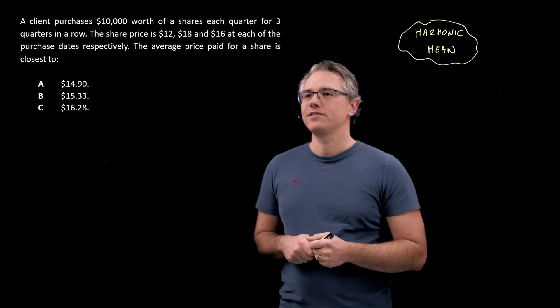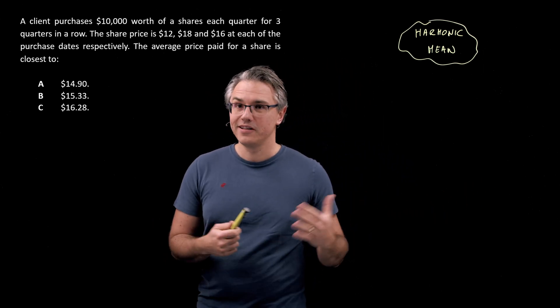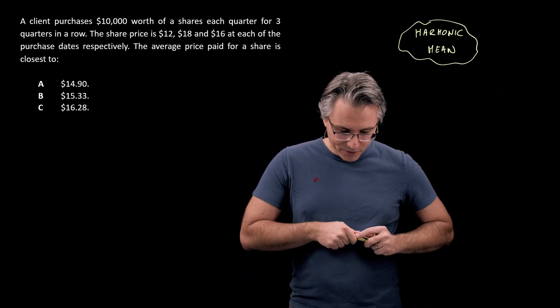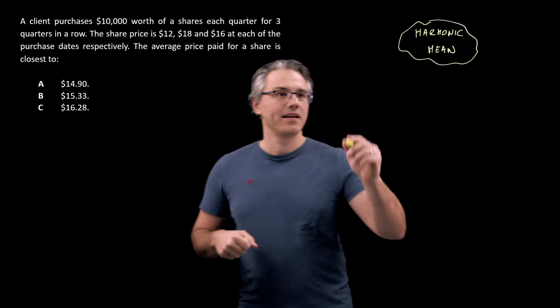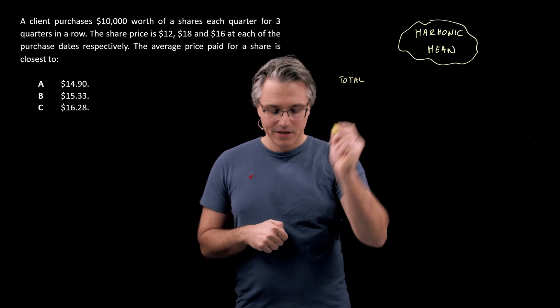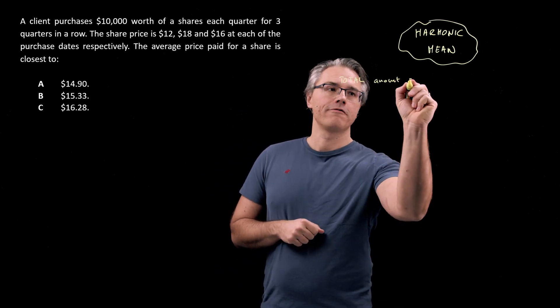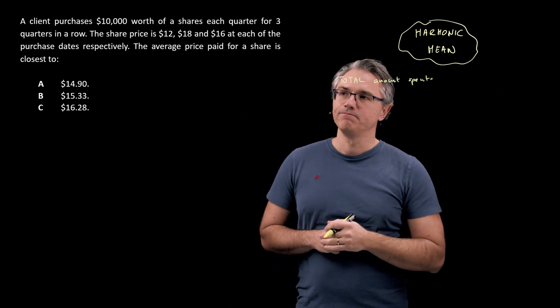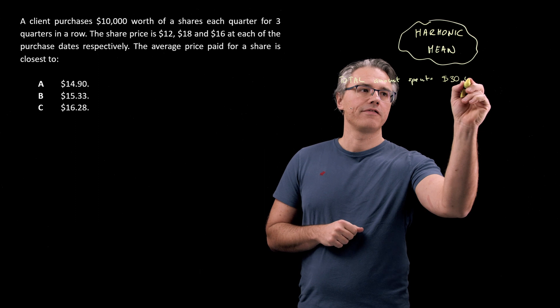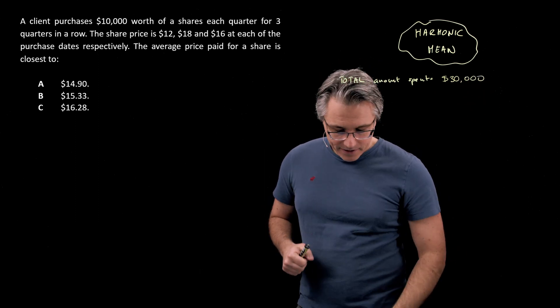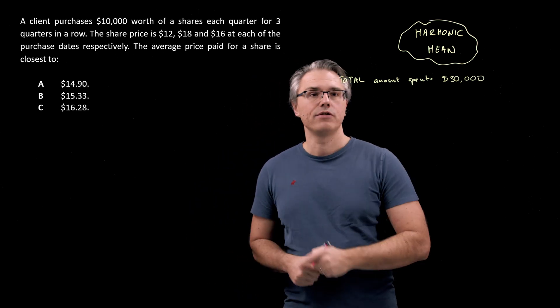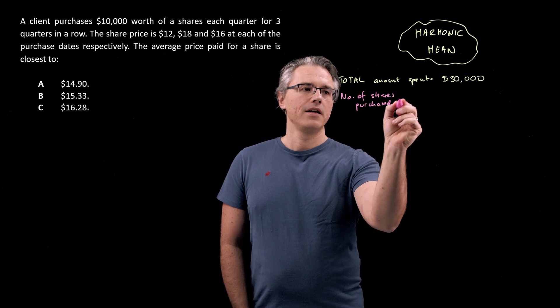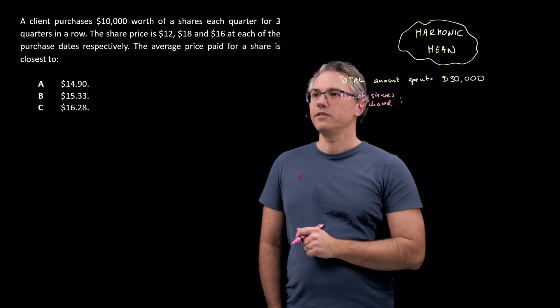But before I do that, let's just do it the long way. Let's say you forget the formula that I'm going to show you in a moment and you need to do this in the exam. What's the total amount spent over the three quarters? The total amount spent would obviously be three lots of $10,000. That's going to be $30,000 in total. And what's the number of shares purchased, the total number of shares?